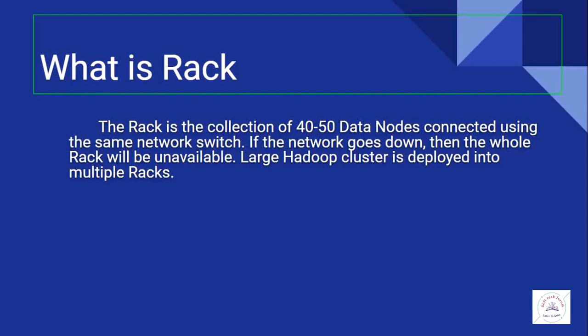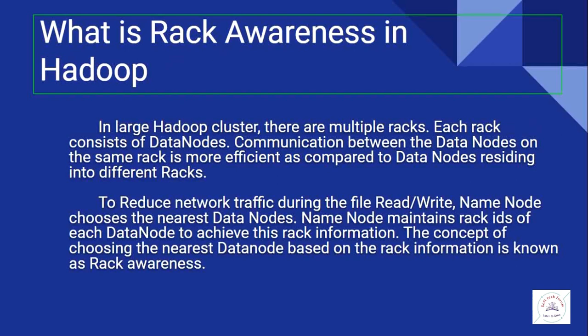Let us understand what is a rack. A rack is nothing but a series of hardware — a collection of 40 to 50 data nodes connected on the same network switch. If one network goes down, the whole rack will be unavailable. Large Hadoop clusters are deployed into multiple racks. In a large Hadoop cluster there are multiple racks, and each rack consists of data nodes.